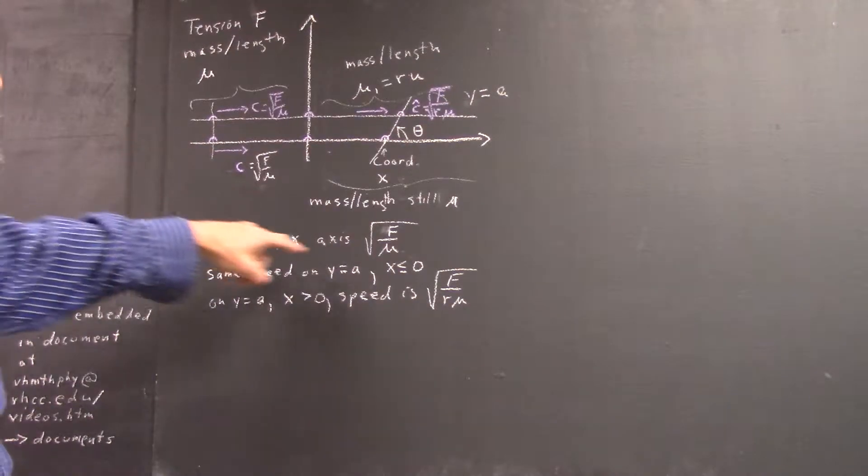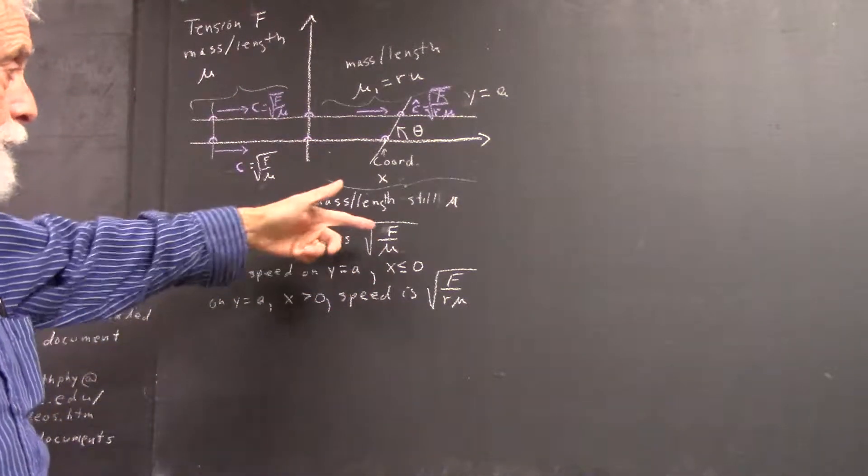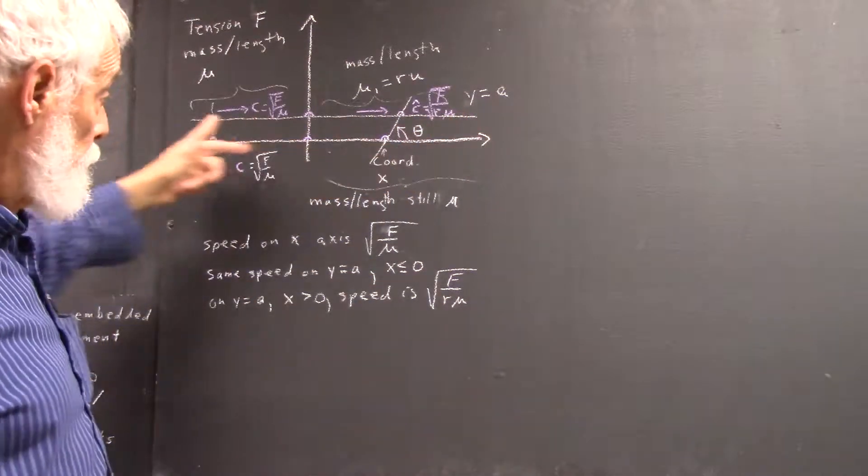So, the speed on the x-axis, the speed of the pulse on the x-axis, that's just square root of f over mu. That's everywhere on the x-axis since the mass doesn't change.